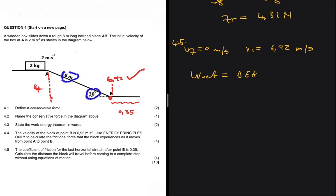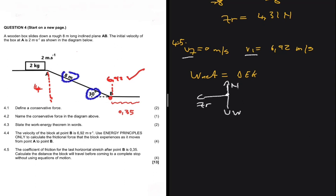We use W_net equals change in E_k, guided by the variables we have. Drawing a free body diagram: on the flat surface the only force doing work is friction, because weight does zero work on a flat surface and the normal force always does zero work. So W_net equals frictional force times delta x times cos theta, which equals one-half m·v_f² minus one-half m·v_i².